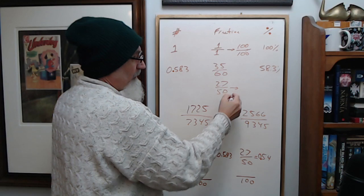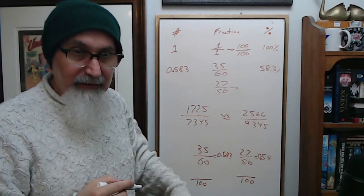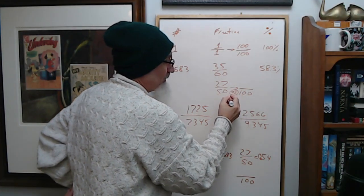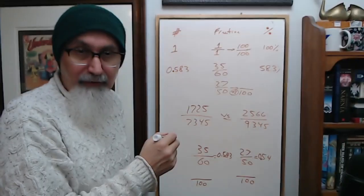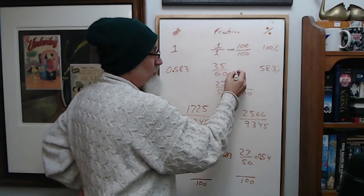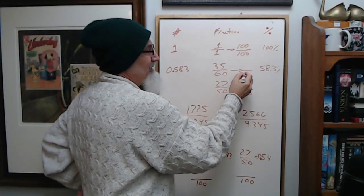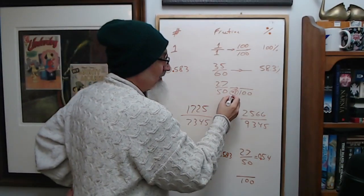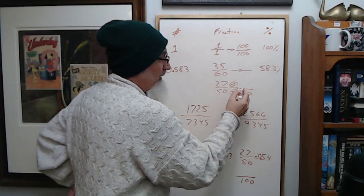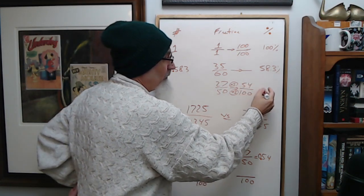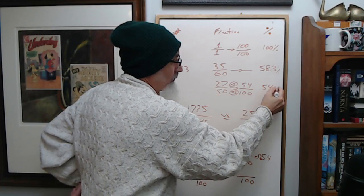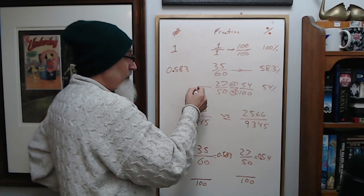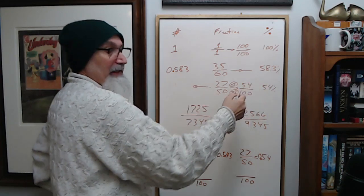This one, 27 over 50: two ways you can get to the percentage. You can write this as over a hundred, so you multiply this by 2, 50 by 2 to get to 100. We didn't do this with the other one because it's hard—what are you going to multiply 60 by to take you to 100? But with 50 it's easy, multiply by 2, so this becomes 54, so that's 54 percent.